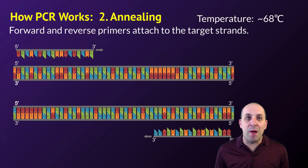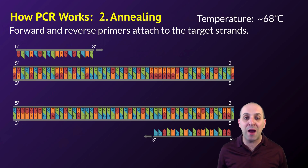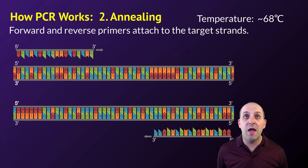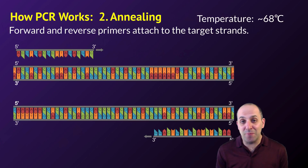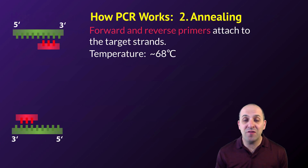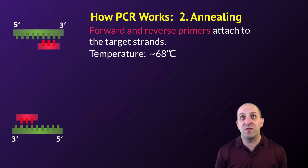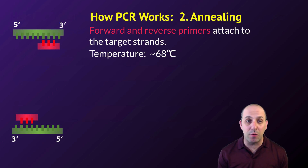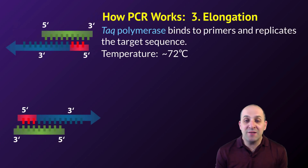In the second step, forward and reverse primers — small complementary sequences that have been created in the lab and bracket the sequence of interest — are exposed to the denatured DNA and attach to the target strand we want to copy. This second step, the annealing step, happens at a temperature of 68 degrees Celsius. After this step, we have two separated strands of DNA with the forward and reverse primers attached to the start and stop of the sequence we want to copy.